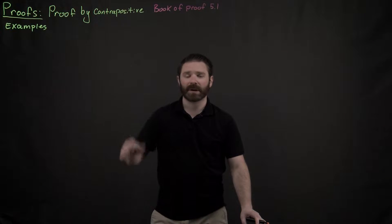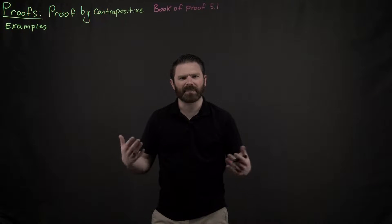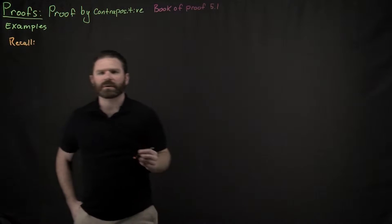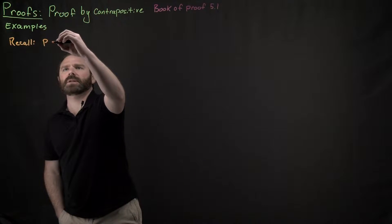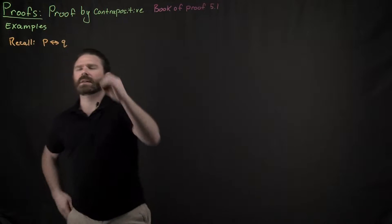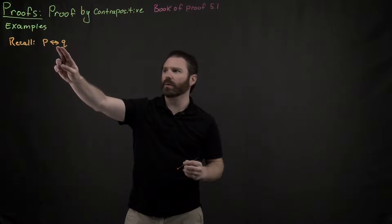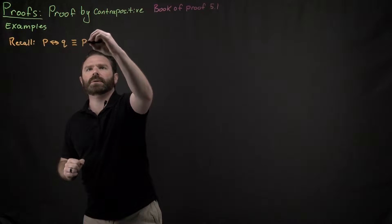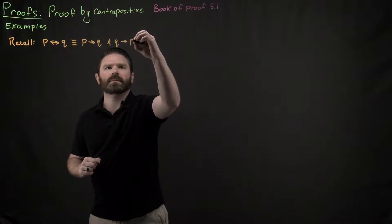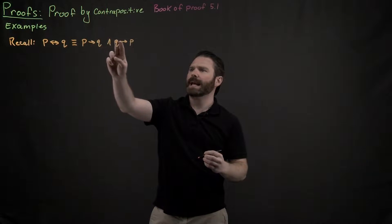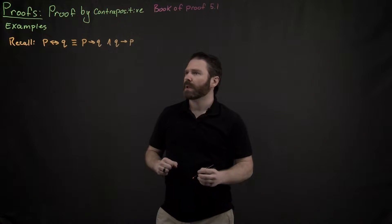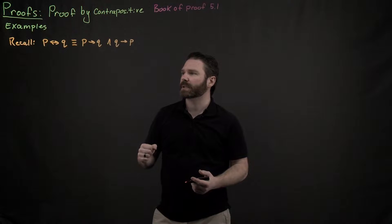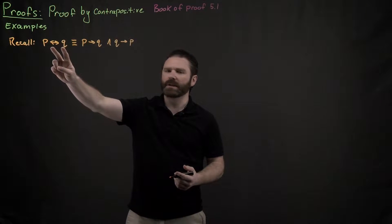As another example for a proof by contrapositive, you remember when we talked about biconditionals? We had logical expressions that look like P if and only if Q. We saw that this was logically equivalent to P implies Q and Q implies P. It turns out that a proof by contrapositive can help us prove a statement that uses a biconditional.